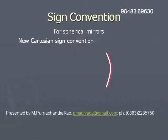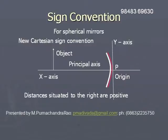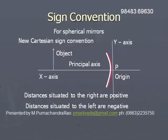In this sign convention, the pole of the mirror is taken as the origin of the coordinate system. The principal axis is taken as the x-axis, and the perpendicular to it at the origin is taken as the y-axis. This coordinate system is adopted to measure distances.